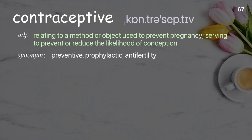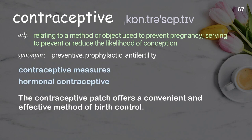Contraceptive: relating to a method or object used to prevent pregnancy; serving to prevent or reduce the likelihood of conception. Examples: contraceptive measures, hormonal contraceptive. The contraceptive patch offers a convenient and effective method of birth control.